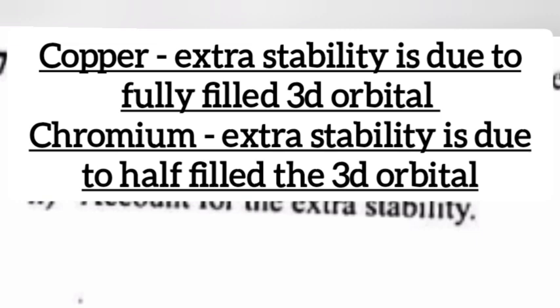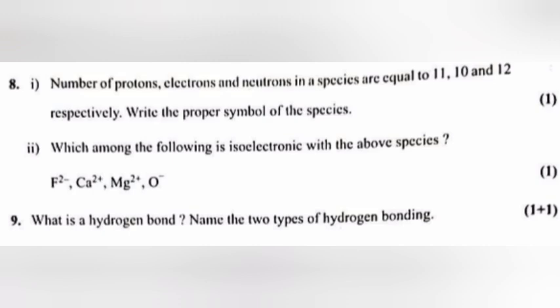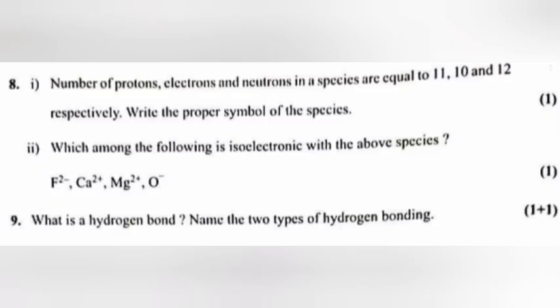Question 8, part 1: Number of protons, electrons, and neutrons in a species are equal to 11, 10, and 12 respectively. Write the proper symbol of the species. Answer: Na+. Part 2: Which among the following is isoelectronic with the above species? Answer: Mg2+.